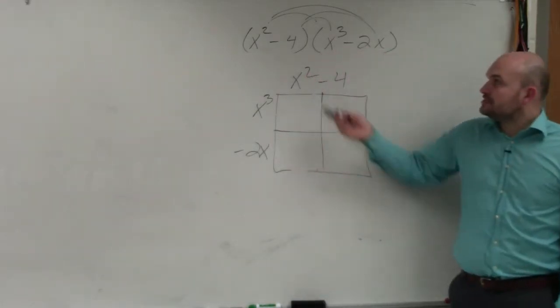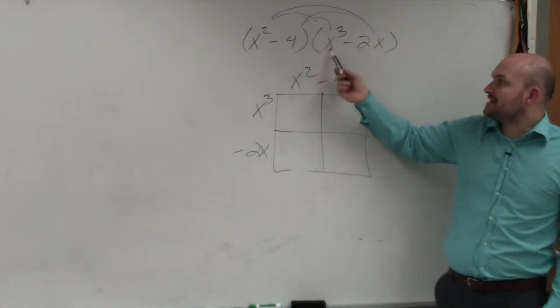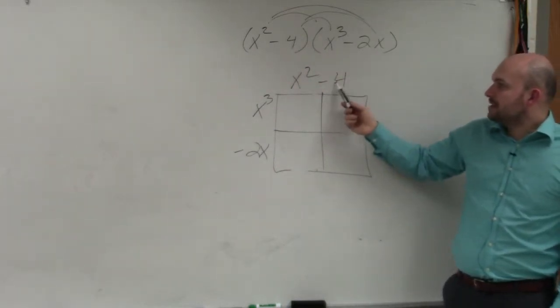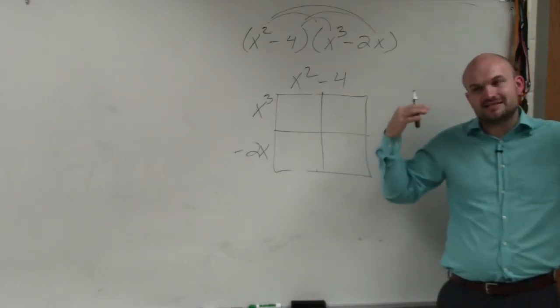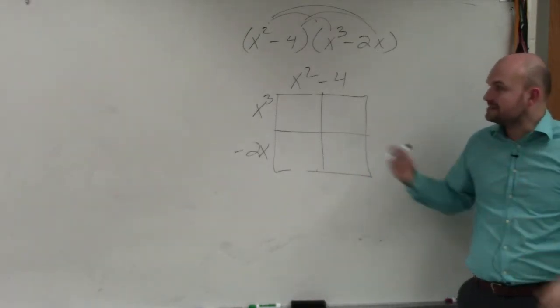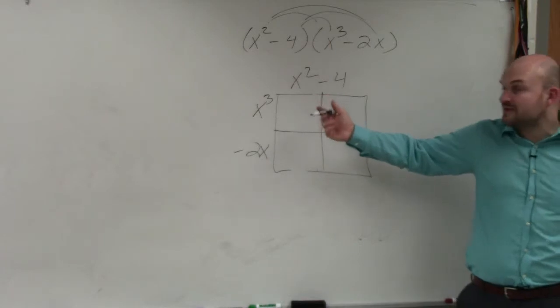And now what we're doing is just like I would multiply four times x cubed and four times 2x. But you can see I'm going to do that again here. Now I'm visualizing this as finding the area of each of these little boxes. So now what I do is just find the area of each box.